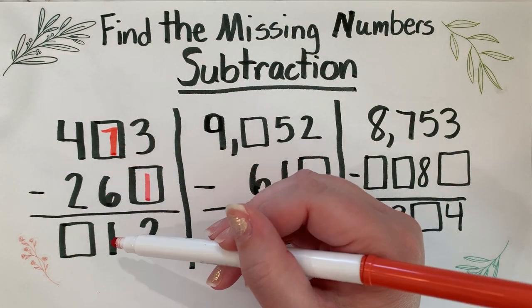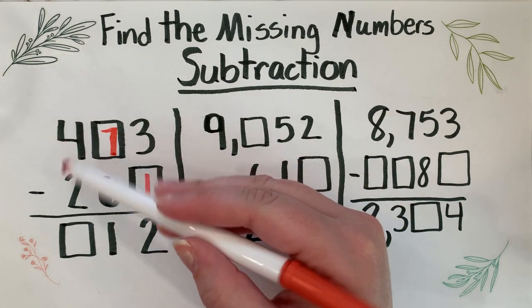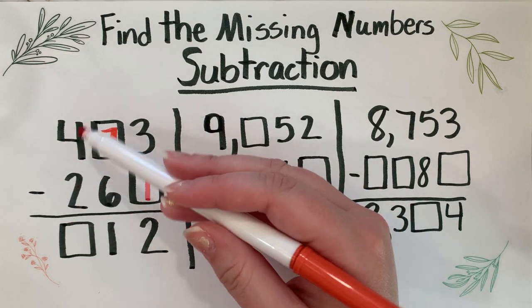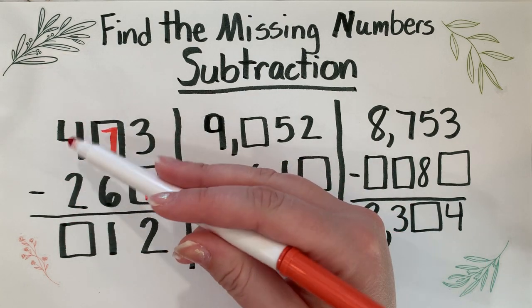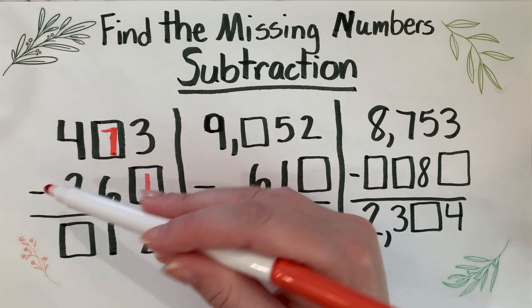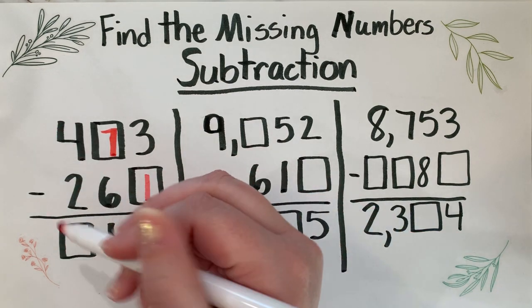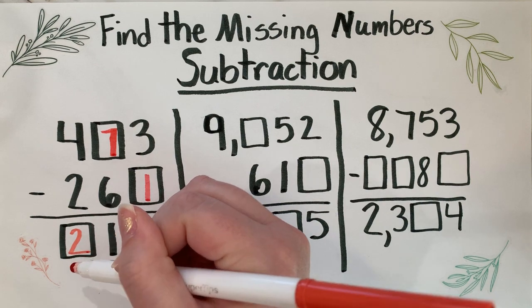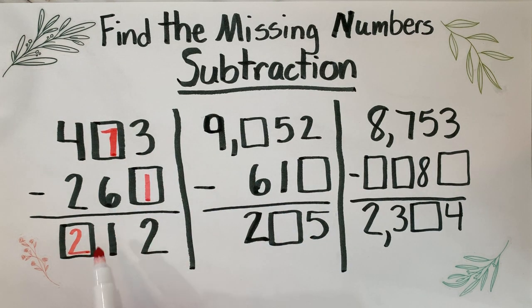Next column, what place is this? Do you remember? It's the hundreds place. So four minus two equals - you already knew this - we just want to know the difference, which is the answer to a subtraction problem. Four minus two is two. So these are the missing numbers. Check and see if you were correct.